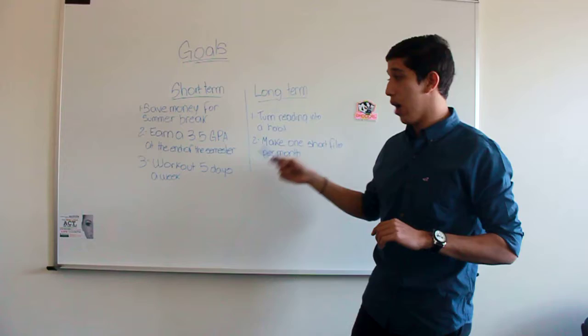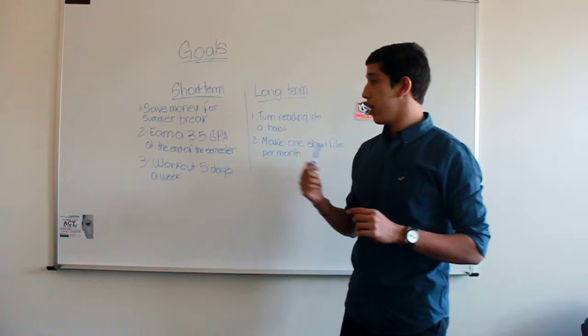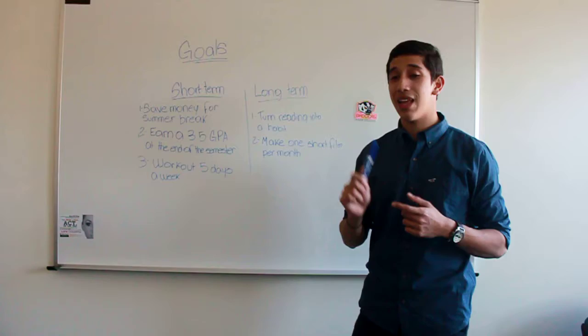The third one is I'm going to work out five days a week. I will work out five days a week because I'm going to set one hour per day to work out.